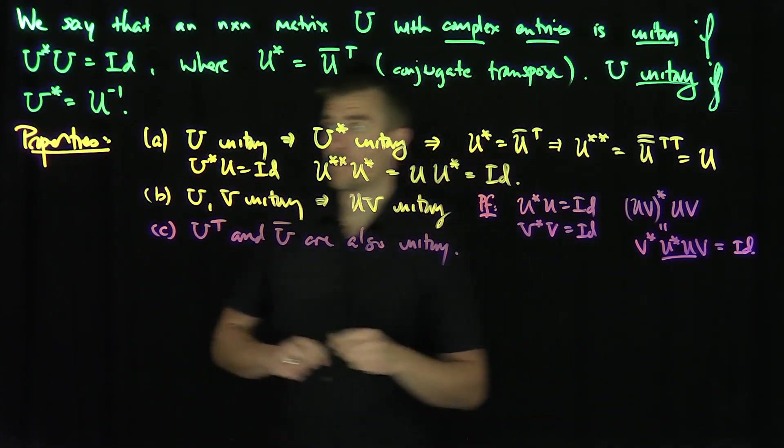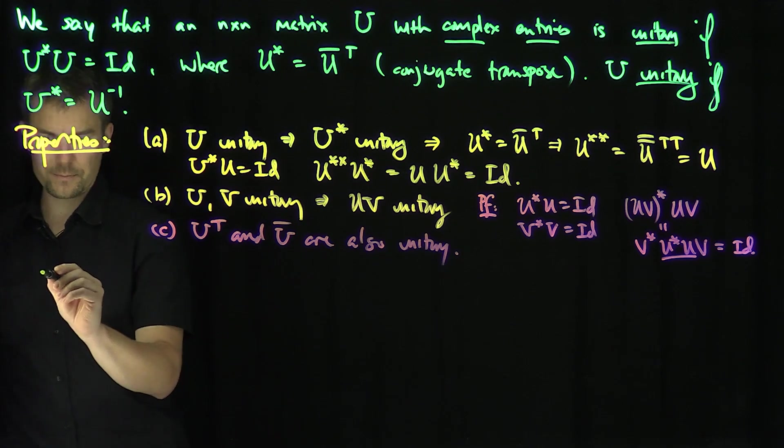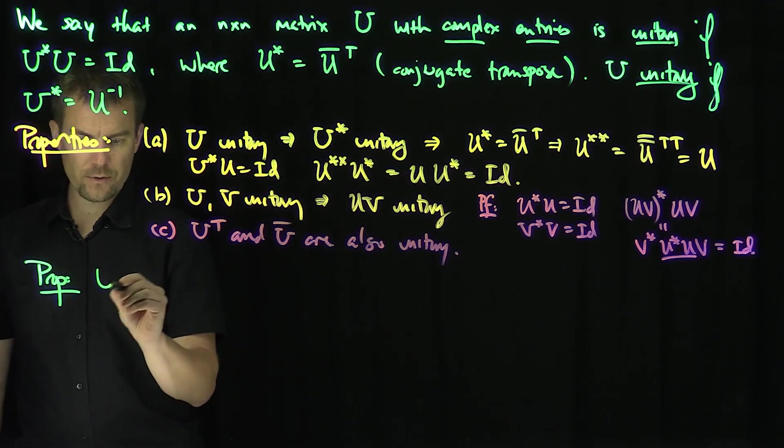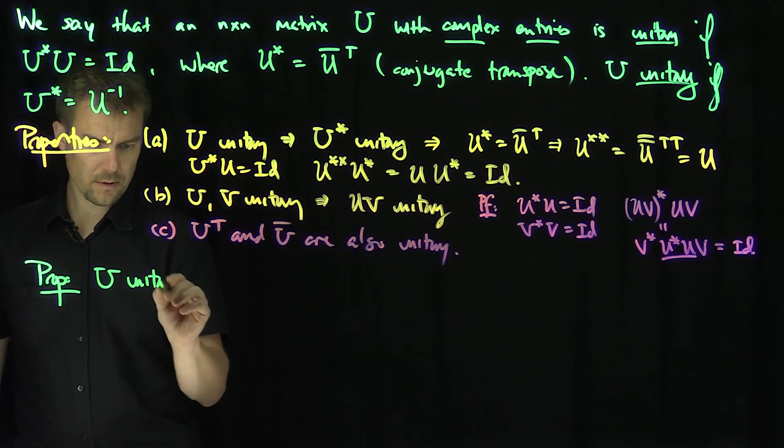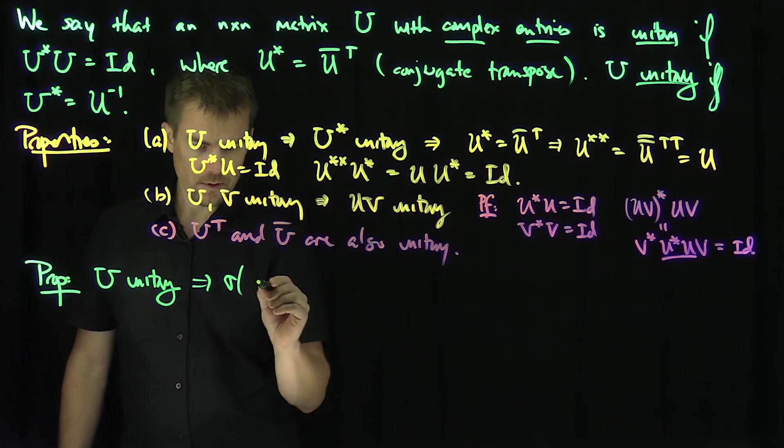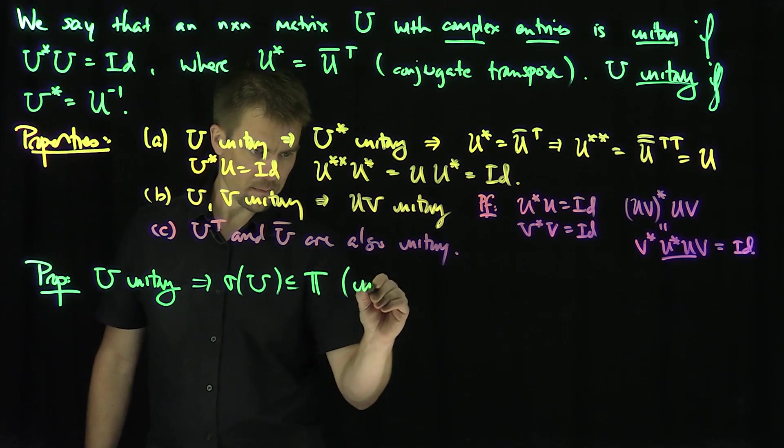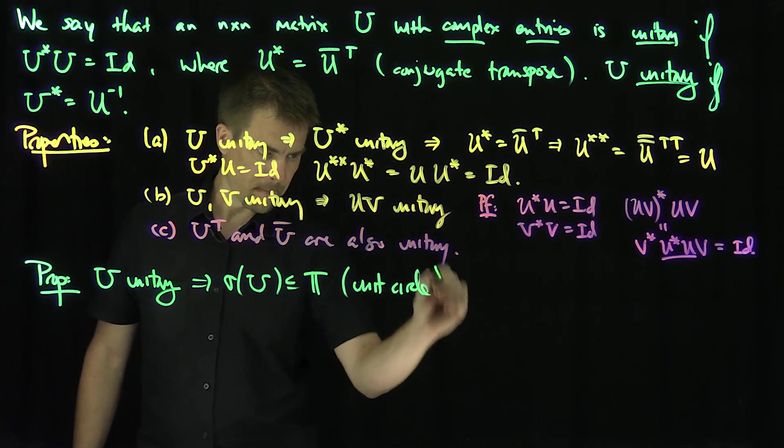Now, one of the most important spectral properties of unitary operators is the following. Proposition: U is unitary. This implies the spectrum of U is a subset of the unit circle in the complex plane.